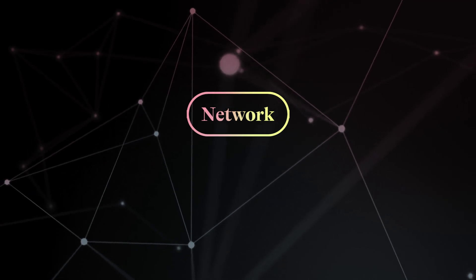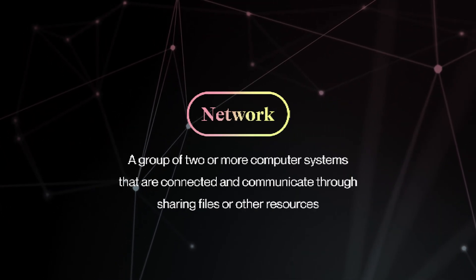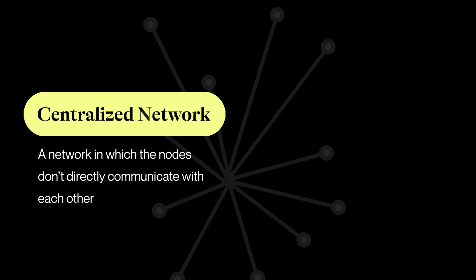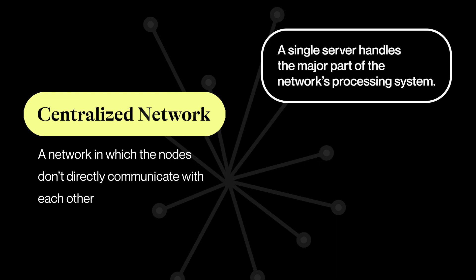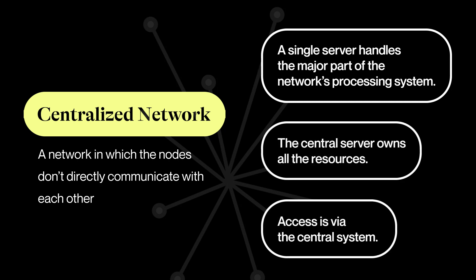It might help to begin with understanding what we mean by centralized systems and considering a historical overview of how these systems have controlled and governed societies for many years. A centralized network is a group of two or more computer systems that are connected and share files or other resources through this connectivity. In a centralized network, the nodes of information don't directly communicate with one another; the system is governed by a single server which handles the majority of processes and information flow. All the resources would be in the custody of the centralized server, and access to these resources must go via that central system.